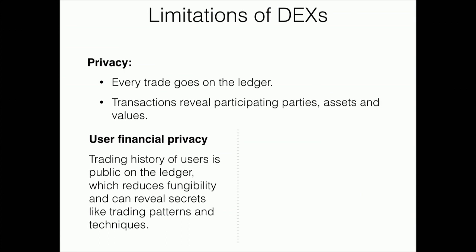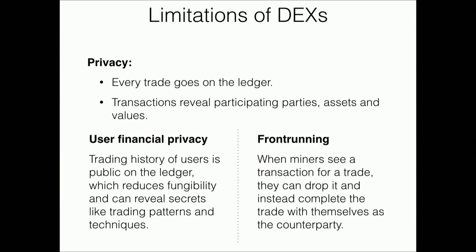This lack of privacy is also harmful to the DEX ecosystem as a whole, in that it enables front-running. When a miner sees a transaction completing a trade, the miner can drop that transaction and replace it with one where the miner itself is a counterparty, gaining money via price information asymmetry. This is not a theoretical vulnerability — the folks at IC3 have shown you can actually exploit this to get a reasonable amount of money.